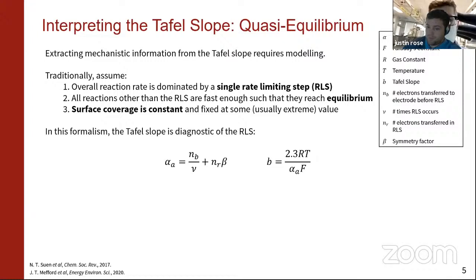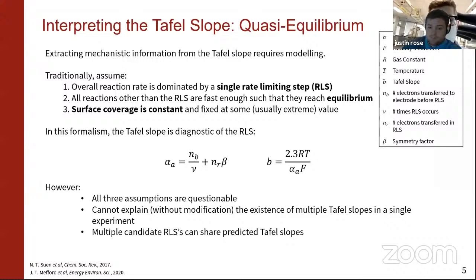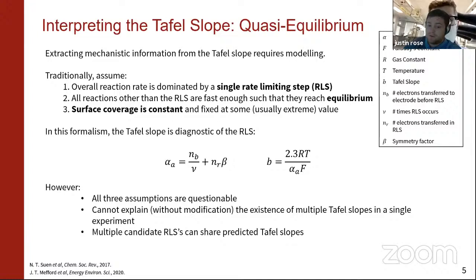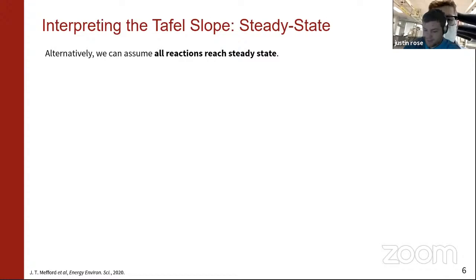The issue is that all three of those assumptions are questionable — no one really believes they're right, though they do make modeling substantially easier. Additionally, the Tafel plot usually exhibits multiple Tafel slopes, which cannot be explained with this traditional approach. Furthermore, if you have multiple mechanisms or multiple potential rate-limiting reactions, many of those can share the same Tafel slope, so it's not actually necessarily diagnostic. This is where the innovation of the paper starts to come in: using the steady-state assumption. To Tyler's knowledge, this is the first time the oxygen evolution reaction has been modeled with the steady-state assumption instead of the quasi-equilibrium assumption.